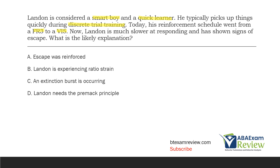FR3, fixed ratio 3, means previously every three correct responses landed would get reinforcement. The new schedule, VI5, variable interval 5, means on average every five minutes Landon gets reinforced. That's a giant change — going from every three responses to on average every five minutes. That's a huge leap in the amount of reinforcement delivered and when reinforcement is delivered. As a result, Landon is responding slower and showing signs of escape. His behavior is changing and new maladaptive behaviors are emerging. When you fade a reinforcement schedule too quickly, sometimes responding goes down and maladaptive behaviors begin to occur.